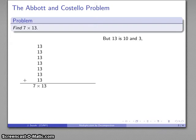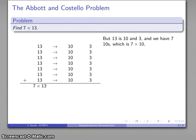And something I can do to make my life much easier is to remember that 13 is 10 and 3. So each of these thirteens is really a 10 and a 3, so when I add them together, what I'm going to get are 7 tens and 7 threes.